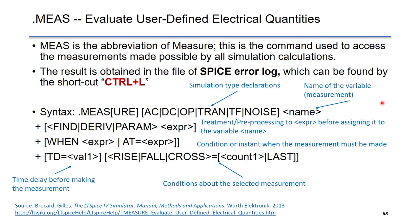The result is obtained in the file of SPICE error log, which can be found by the shortcut Ctrl L.